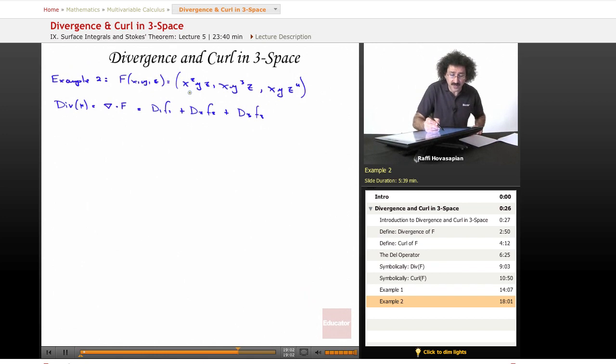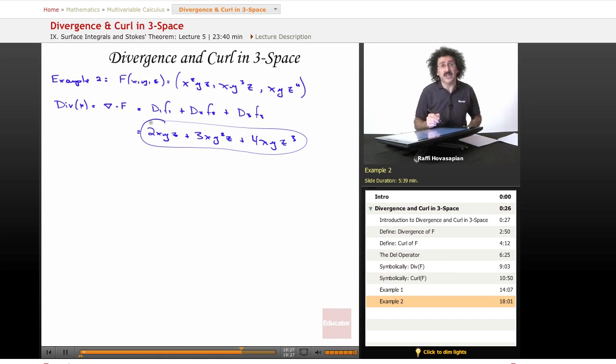Well, the derivative of this with respect to x is going to be 2xyz plus this one. The derivative with respect to y is going to be plus 3xy squared z, and the derivative with respect to z of this one is going to be plus 4xyz cubed. This is our divergence of the particular vector field.